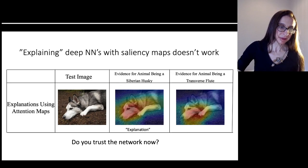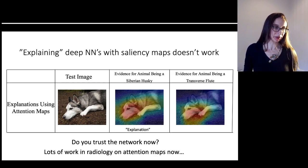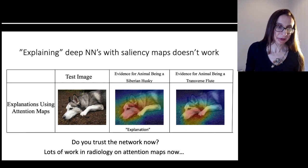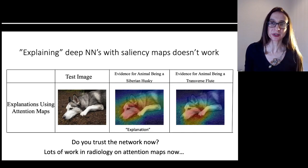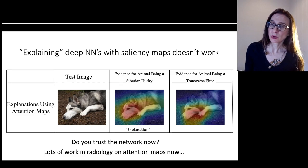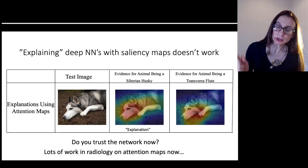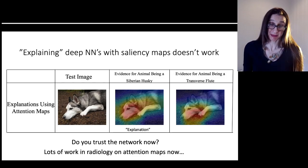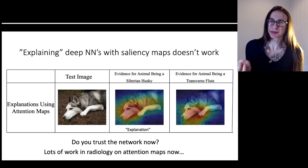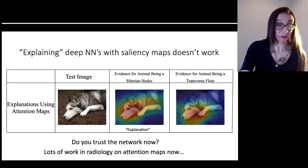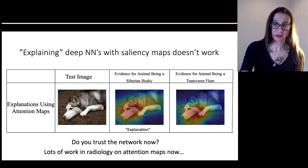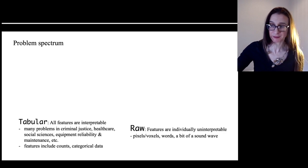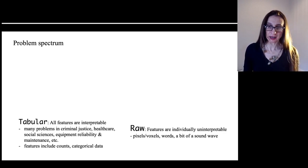There's a lot of work in radiology on attention maps right now, but they really cause a problem because they just tell you where the network is looking, not what the network is actually doing with the pixels it highlights. It's like if you asked a real estate agent how they priced your house and they said 'I was looking at your roof' — and when you asked what about your roof, they just said 'I'm looking at your roof.' There's no explanation; it's just where you're looking. I'm concerned that saliency maps are considered sufficient explanation in radiology right now.